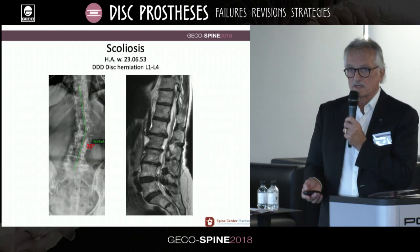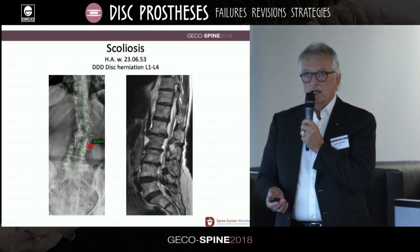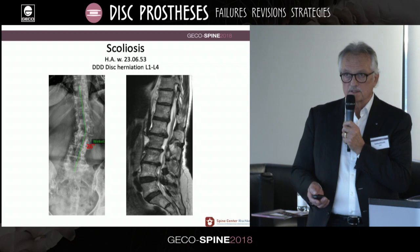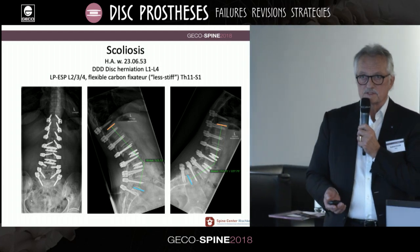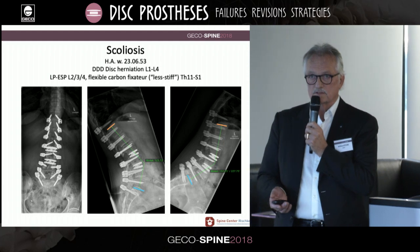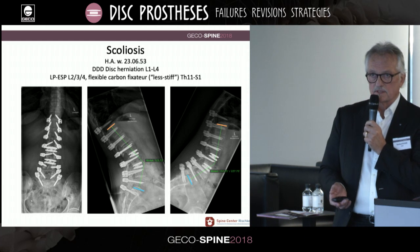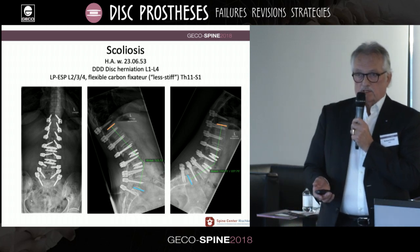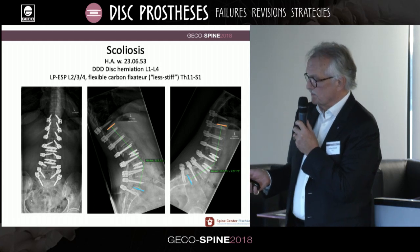The next one is a severe scoliosis with 25 degrees and multiple degenerative disc diseases. We decided on surgery in two steps. First, we reduced the scoliosis with the dynamic carbon rods fixator. Afterwards, we implanted two artificial discs at L2-3 and L3-4. You can see in the functional X-rays that the patient has very good flexion and extension.